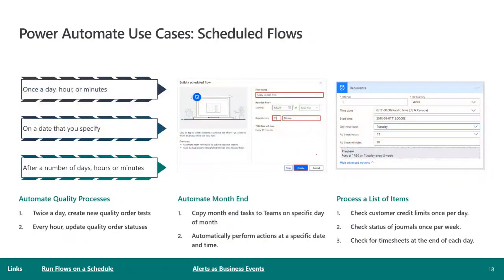Next up are scheduled flows. You can think of these as similar to a batch job. In FNO, if we have custom logic that needs to execute on a specified interval — maybe daily, nightly, or weekly — we often create custom X++ classes that extend the batch framework. Another way to approach those requirements is by using a scheduled flow, which allows you to define a frequency — once a day, a certain time of day, hourly, or every so many minutes. You can also specify it should occur on the 28th of the month or after a certain number of days, hours, or minutes.